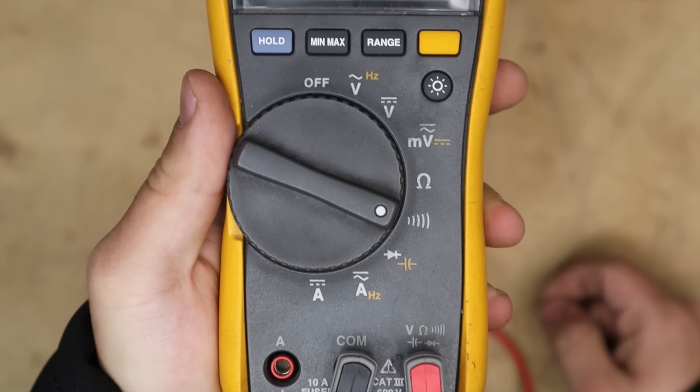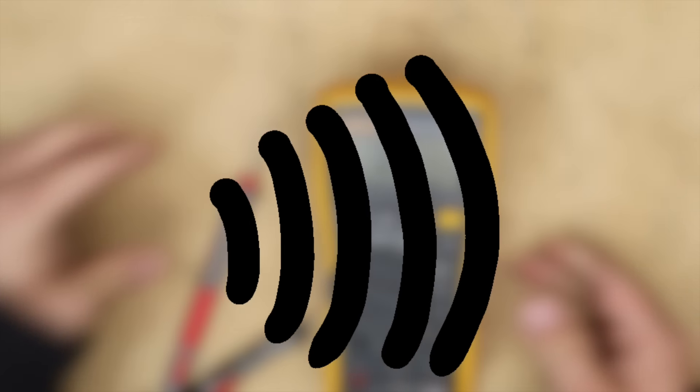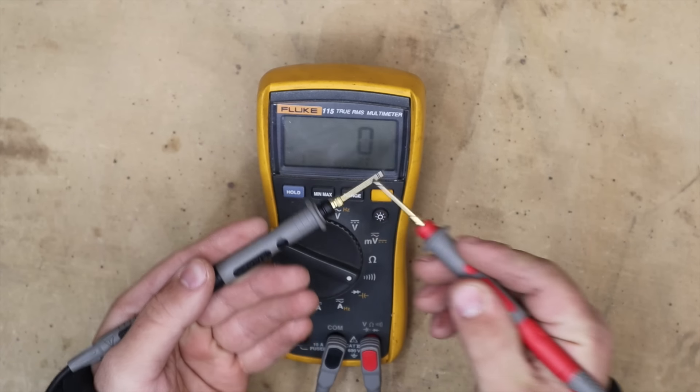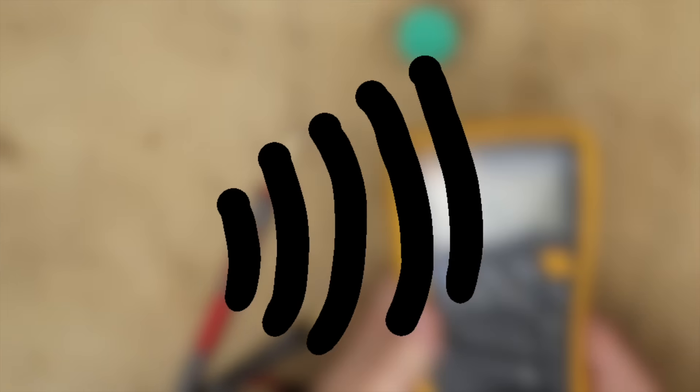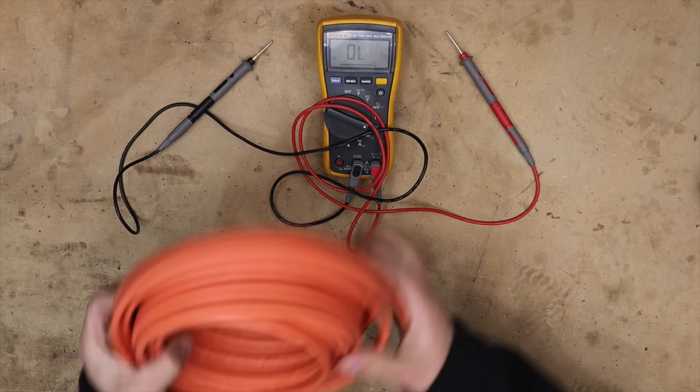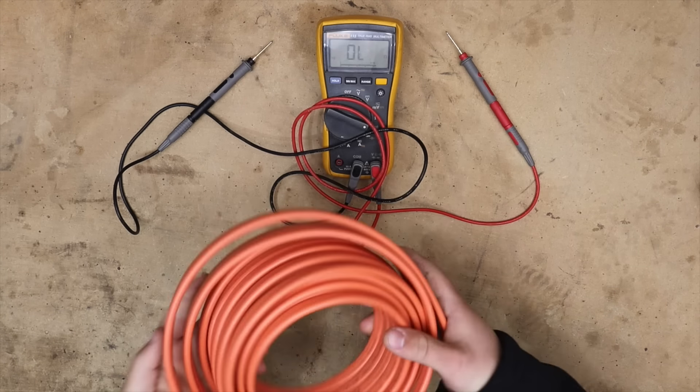The next common feature is continuity and this is one of the simplest and surprisingly useful features on a multimeter. So this feature essentially just makes a tone when continuity is found with low enough resistance. This feature can be used for example if we have a large row of wire like this and we want to verify that the wire inside is not broken anywhere.